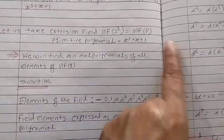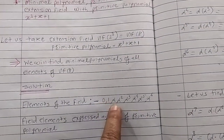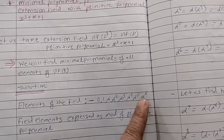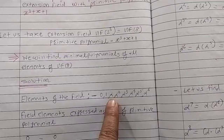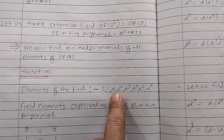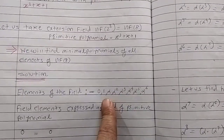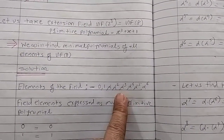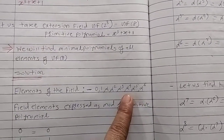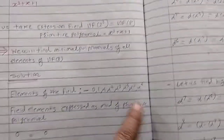How many elements are there in GF(8)? There are 8 elements: 0, 1, α, α², α³, α⁴, α⁵, α⁶. The elements are expressed in terms of powers of the primitive element α. What is a primitive element and how/why the elements are expressed as its powers is discussed in the video on primitive elements and its properties.